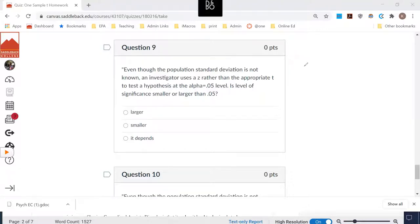Let's discuss question nine. It says that even though the population standard deviation is not known, an investigator uses a z rather than the appropriate t to test the hypothesis with the alpha at 0.05. So the question is, is the level of significance smaller or larger than 0.05?